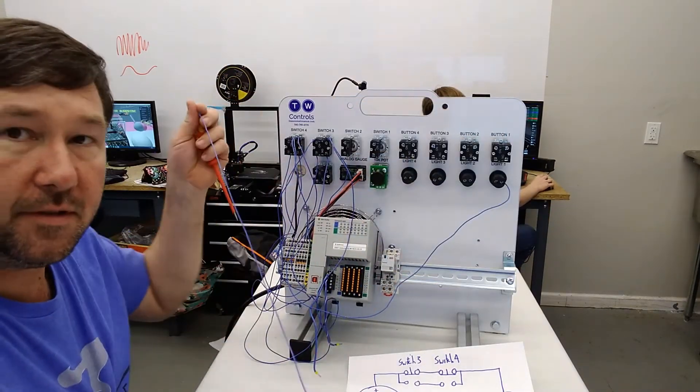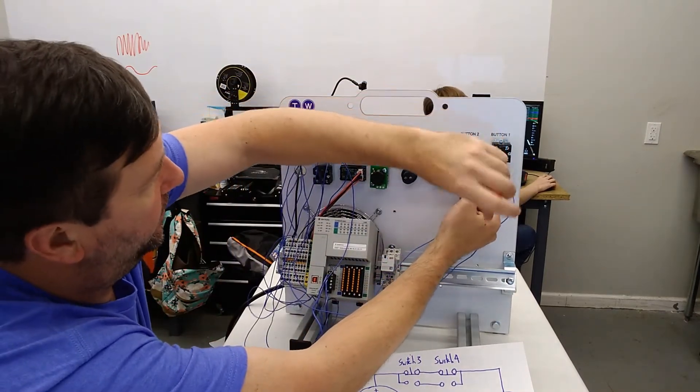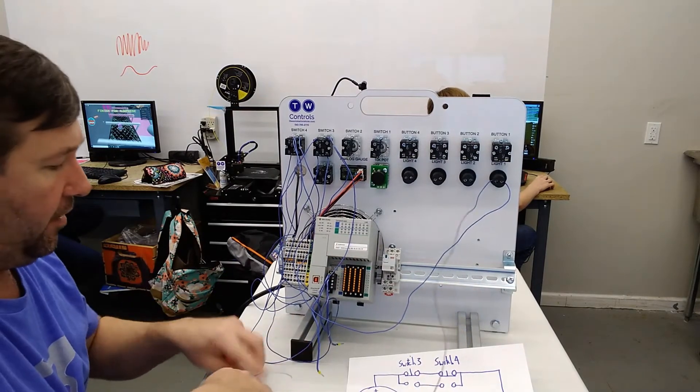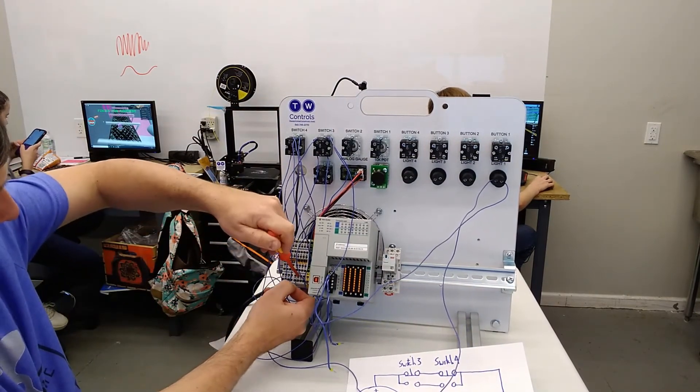And then we're going to connect the wire to the other side of light number one, and we will connect it to the zero volt of our power supply, which is that right hand set of terminals.